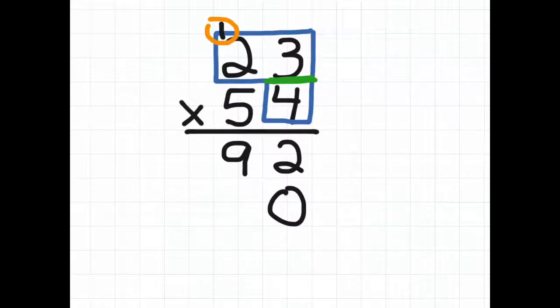So here we go. Now we just do 5 times 3 which is 15 so we write down the 5 and we put up a new 1, not the same 1, it's a different 1. And then 5 times 2 which is 10 plus this new 1 that we just put up here which is 11 and then we write 11 down.